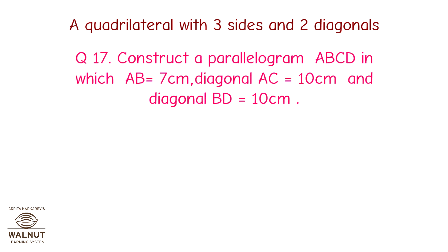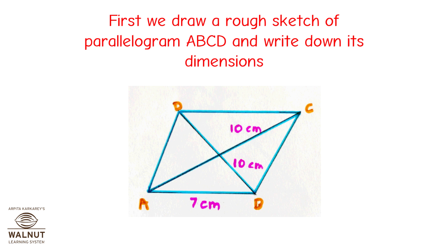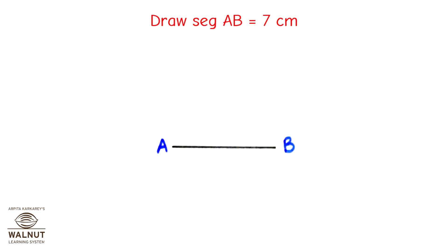Construct a parallelogram ABCD in which AB is equal to 7 cm, diagonal AC is equal to 10 cm, and diagonal BD is equal to 10 cm. First, we draw a rough sketch of parallelogram ABCD and write down its dimensions. From the rough sketch, you can see that there are 2 triangles which we can construct using the SSS construction method: Triangle DAB and Triangle CBA. Let's do it.